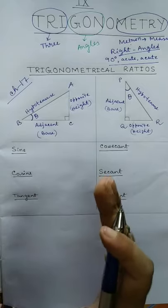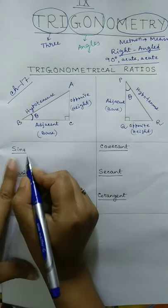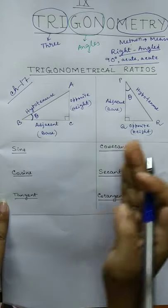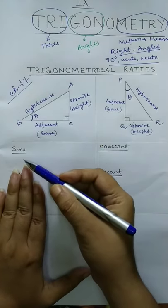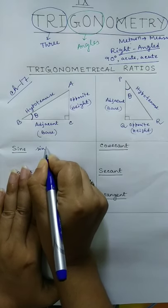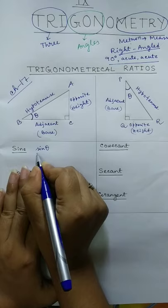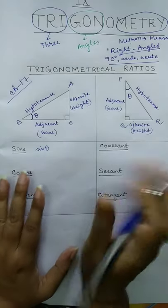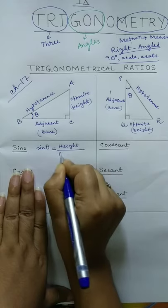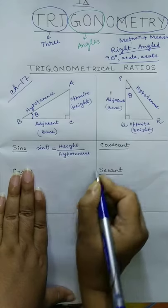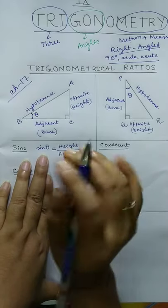Now moving to our specific topic about ratios. There are six types of ratios; the first three are the basics. The first is sine — written as sin theta using a small letter. Sine theta equals height by hypotenuse. This is the relation between this angle and these two sides. The second is cosine, written as cos theta — that equals base by hypotenuse.